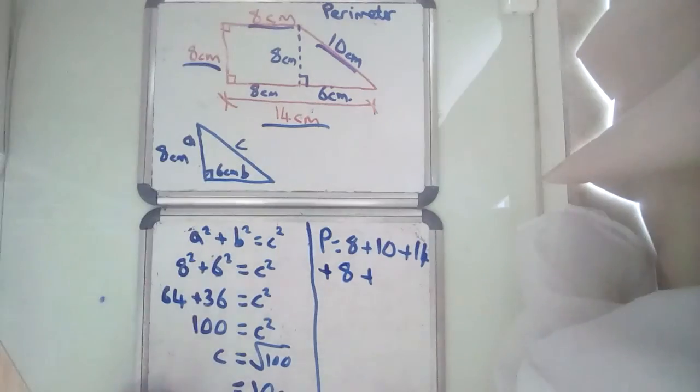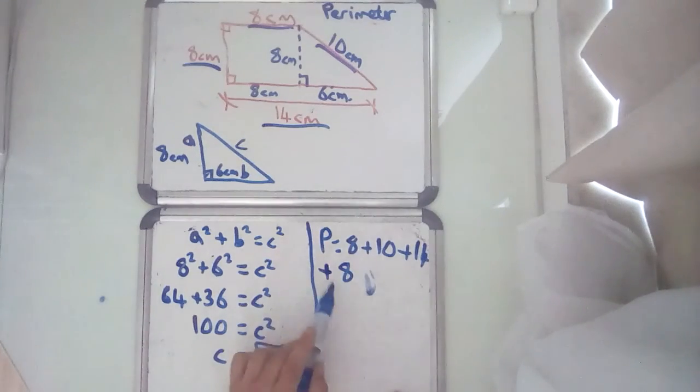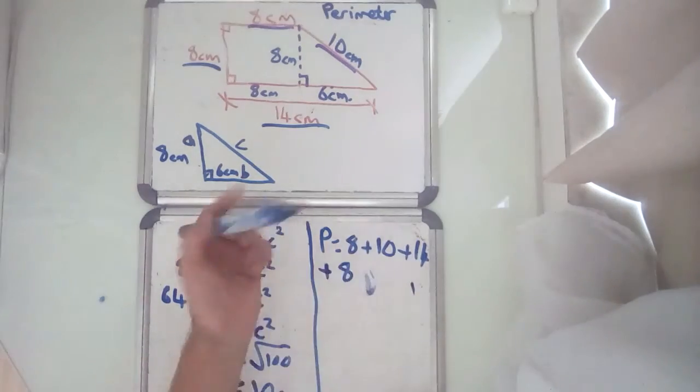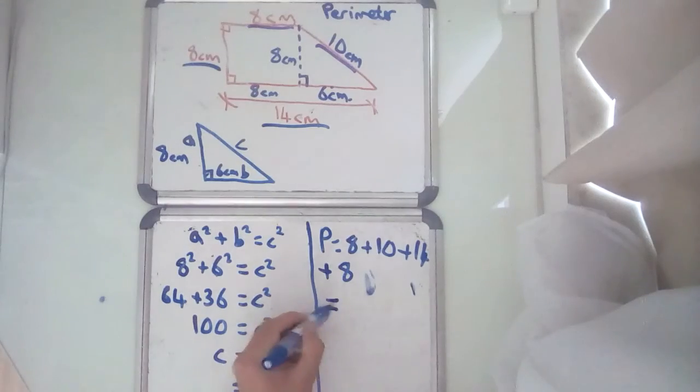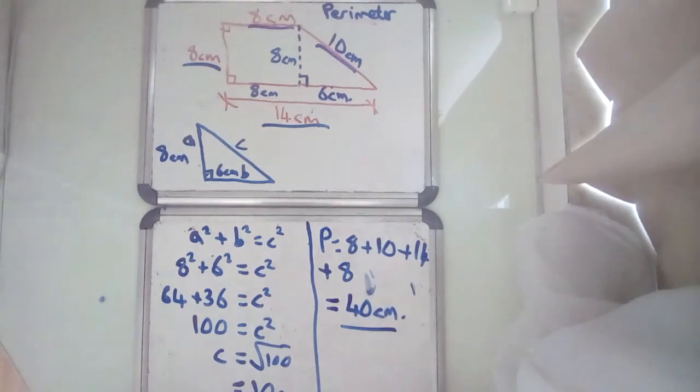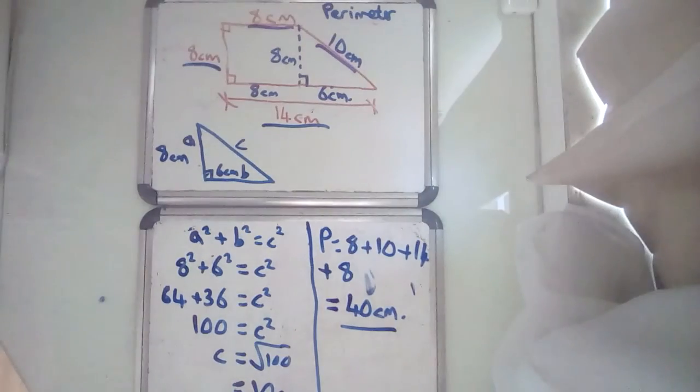I've already underlined, so I must be right. So 8, 8, 16, 16, 16 plus the 14 is 20, 30, 40 centimetres.